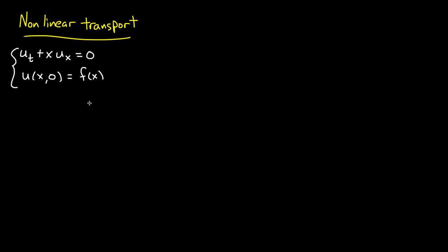I'd like to finish this video by talking about one more variation on the transport equation: non-linear transport. The only difference is that I have a coefficient x instead of constant c — it's a variable speed of transport. I should note that when I say non-linear transport, I don't mean to imply a non-linear differential equation, because in fact it is linear. I use non-linear to describe the transport. We'll see that transport takes place along curves which are not lines — they are exponential curves.